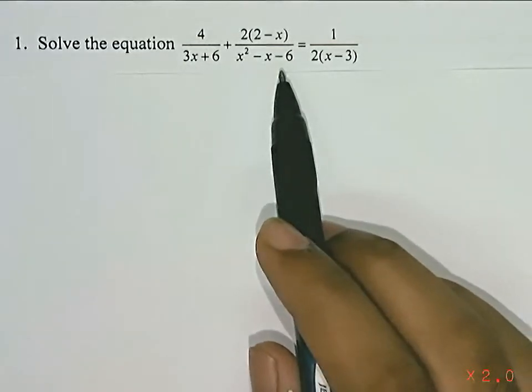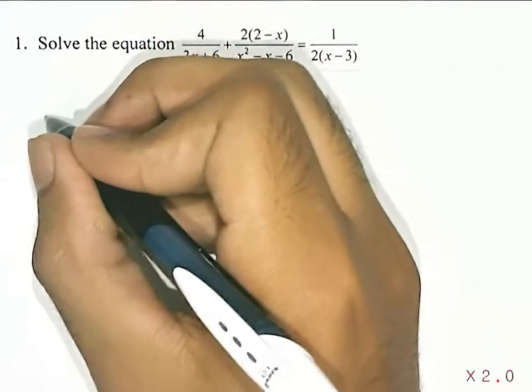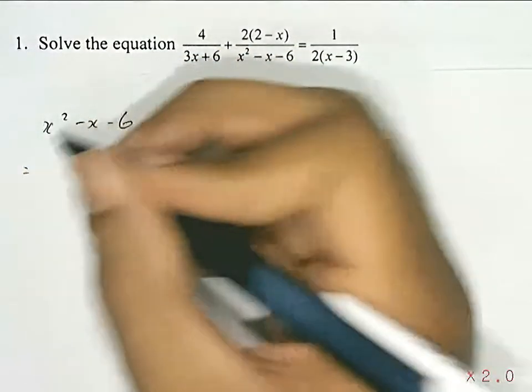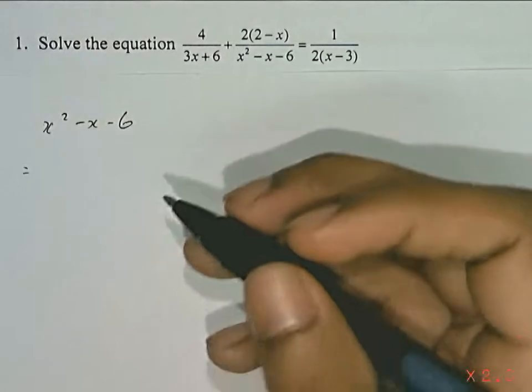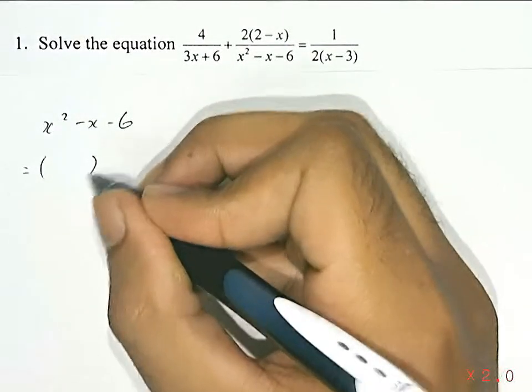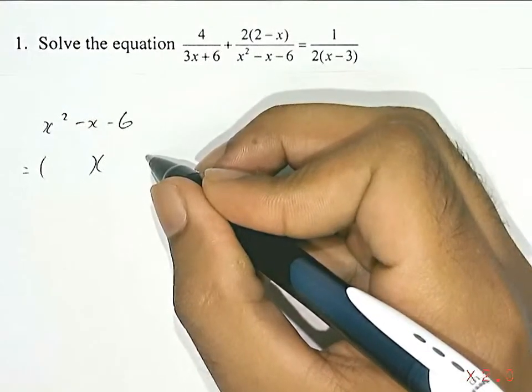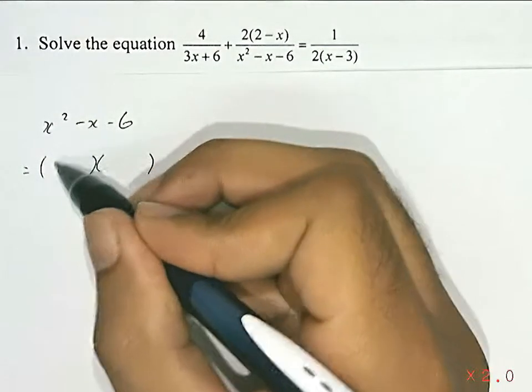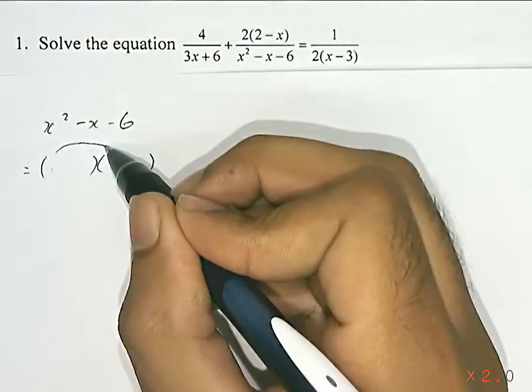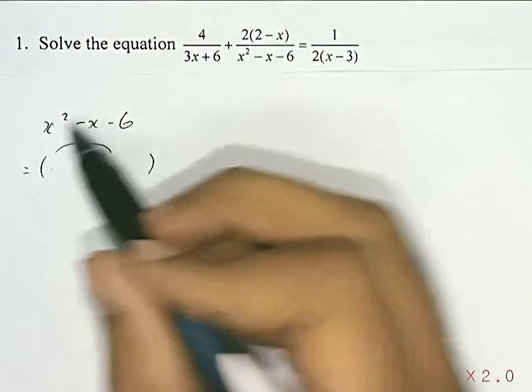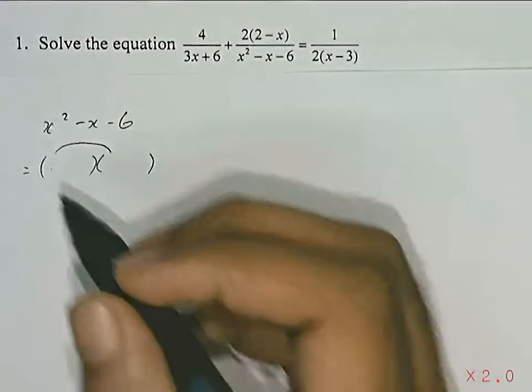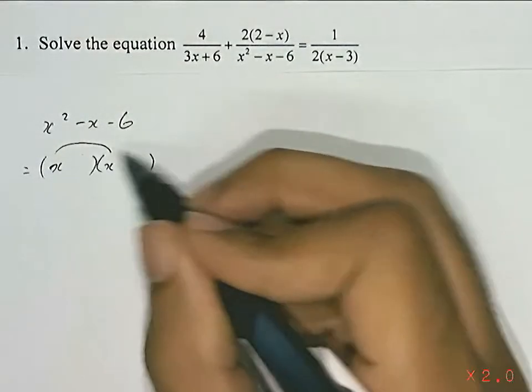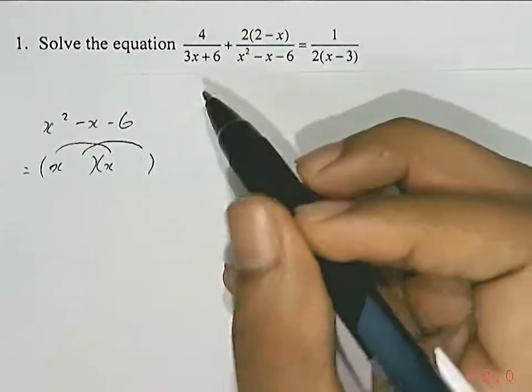So I'll start by factorizing this. I'm not going to use the cross-factorization method. I'm going to use a slightly different method, but it's based on the same principle. So in this method, the term in this position and this position should multiply with each other to give you x squared. So the only factors for x squared are x and x.